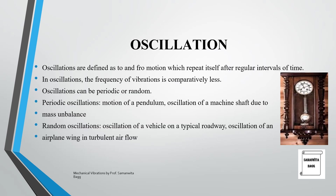Let's start with the first topic: oscillation. Oscillations are defined as to-and-fro motion which repeats itself after regular intervals of time. In oscillations, the frequency of vibrations is comparatively less. Oscillations can be periodic or random. For example, a clock pendulum moves to and fro in a particular interval of time — that is an example of oscillation, and its frequency is obviously less compared to vibration.